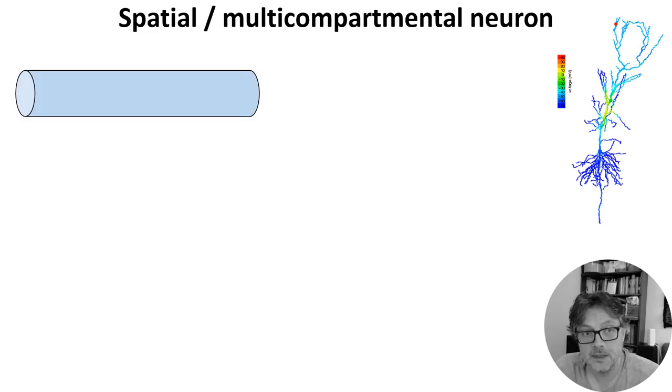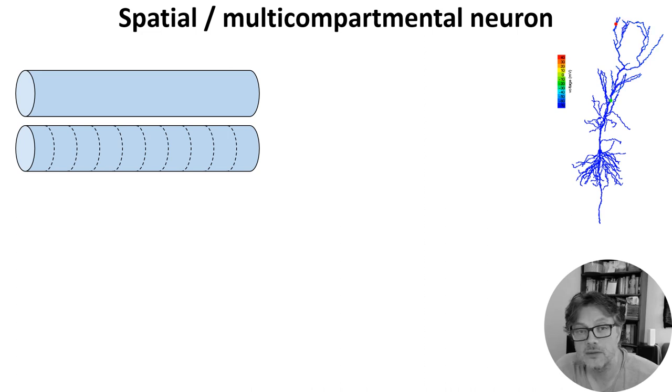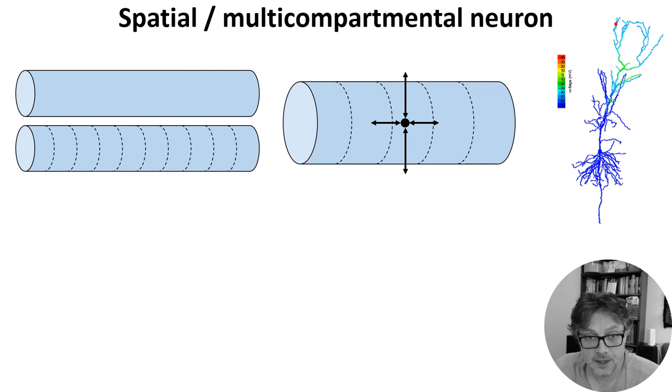We can capture this by thinking of the dendrites and axons as cylinders. We can then break those cylinders into a number of short cylindrical segments that are relatively uniform. We then think of each of these as being nodes in an electrical circuit, as we did with the Hodgkin-Huxley neuron.